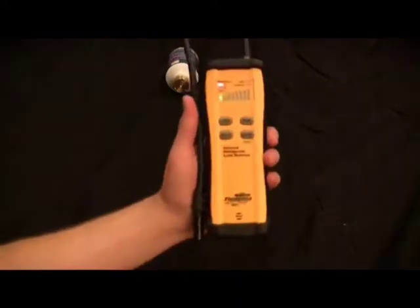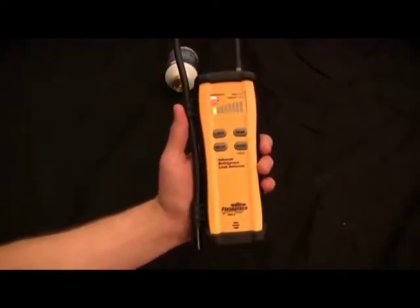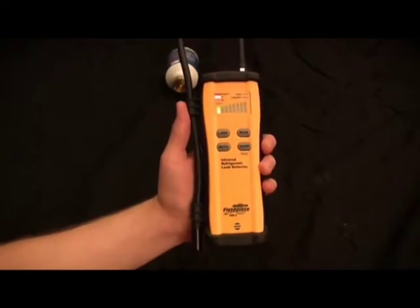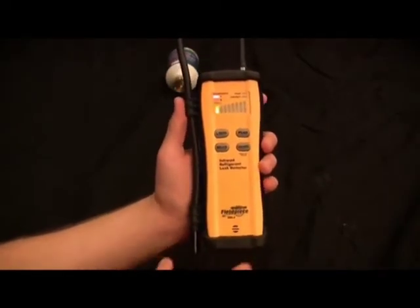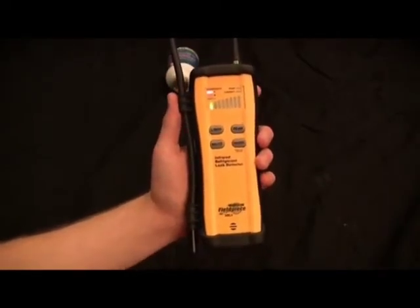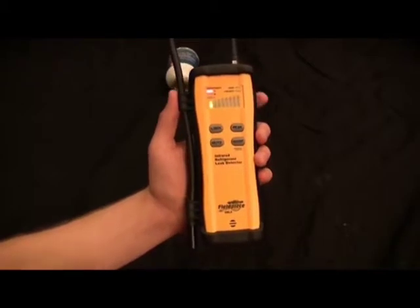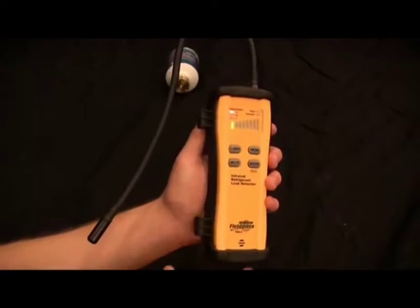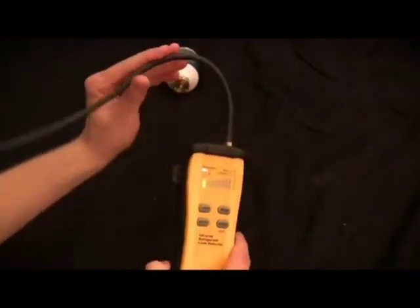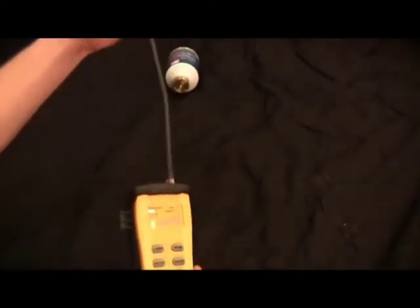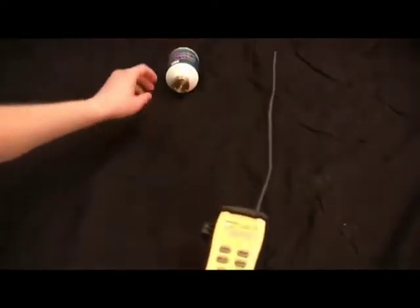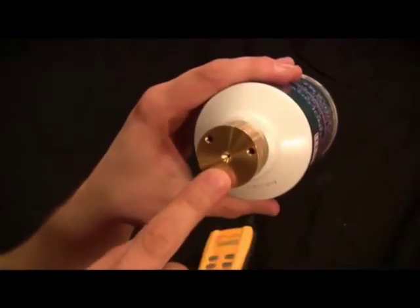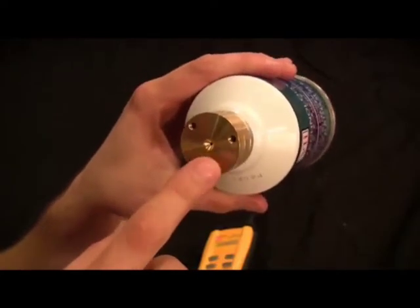So the leak standard right here that I have, you can see that it has a hole and it's just replicating a 0.31 ounces per year outside of that hole. And so let's show you how it works in action. So what you want to do is just slowly move it across the leak and sweep it by and you'll see that it goes off. Now as it goes off, you want to pass it and keep moving and then sweep back and it will go off again as you keep on passing the leak.